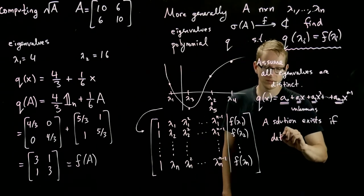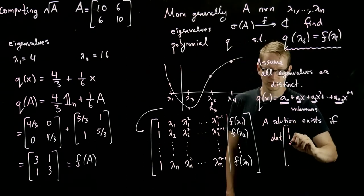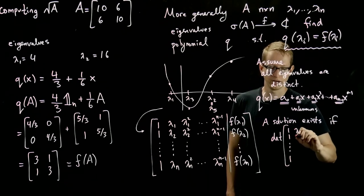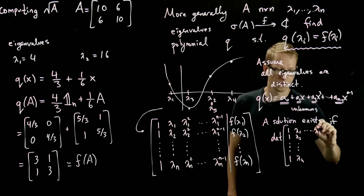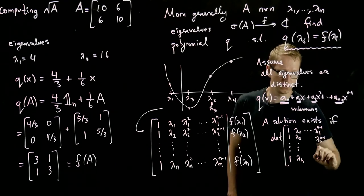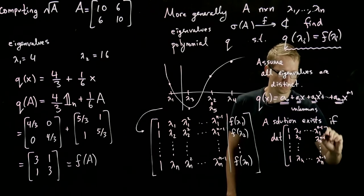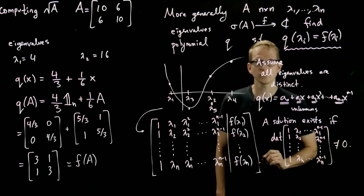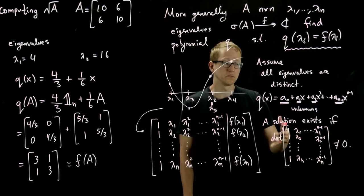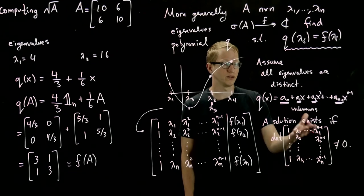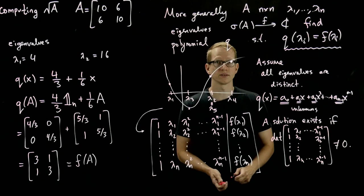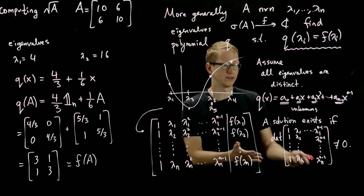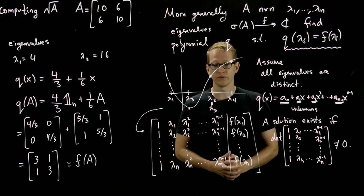So solution exists if the determinant of this matrix, which is called a Vandermonde matrix, if this determinant is non-zero. So what we're going to do is it's going to be a little bit of a brute force method, but we will find one way to compute the determinant of this matrix and therefore show whether or not it's zero and see if we can answer our problem.